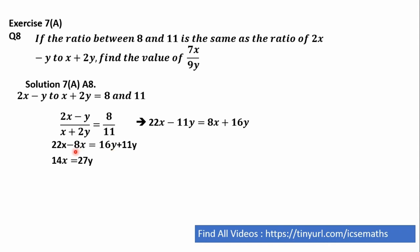Now if we solve this further, 22x minus 8x becomes 14x and 16y plus 11y is equal to 27y, and we can see after further solving this as x by y is equal to 27 by 14. Now we know the value of x and we know the value of y. Only we need to put this value in 7x by 9y, and that is how we can get our answer.